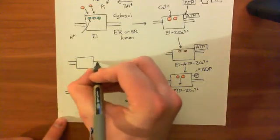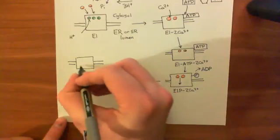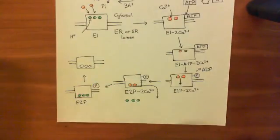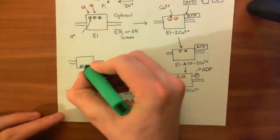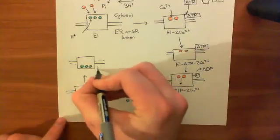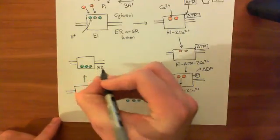You are still in the E2 state—the ions are held closer to the endoplasmic reticulum lumen than to the cytosol—but there is no longer a phosphate group bound there. That's just known as the E2 state now. Again, the protons aren't mentioned.